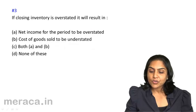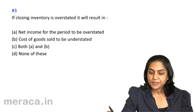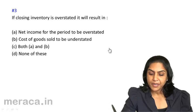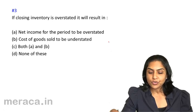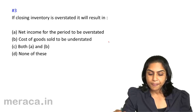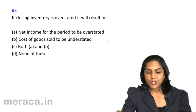Next question: If closing inventory is overstated, it will result in — Option A: Net income for the period to be overstated. Option B: Cost of goods sold to be understated. Option C: Both A and B. And Option D: None of these. What should be the right option?